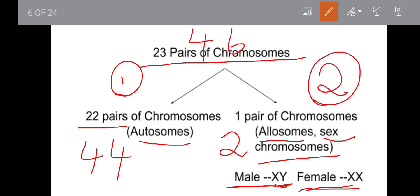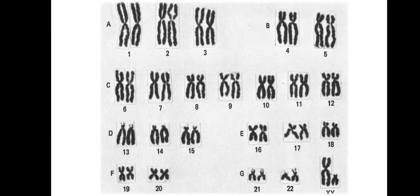Females have 2 X chromosomes. In males, the Y chromosome is present, giving an XY condition. This is how chromosomes are arranged with pairs 1 to 22 being autosomes and the 23rd pair being the sex chromosomes.